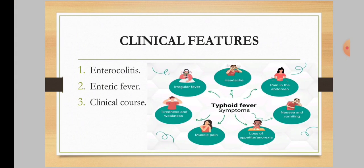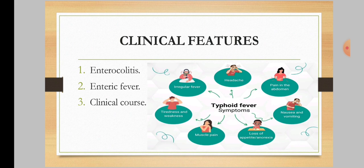Clinical features: First, enterocolitis. In enterocolitis, the infection is usually localized in the small intestines and colon. The incubation period is usually 12 to 72 hours but may be up to two weeks. Nausea, vomiting, and an early chill are common initially, followed by colicky abdominal pain and diarrhea of watery, green, offensive stools. Blood mixed with stool and high fever may occur if there is involvement of the colon.